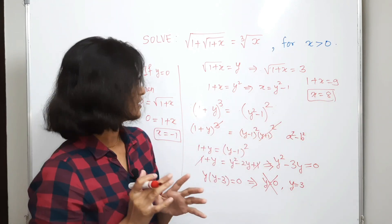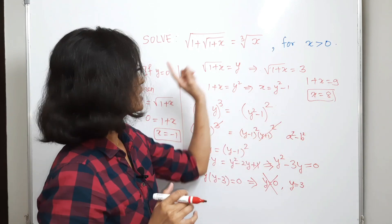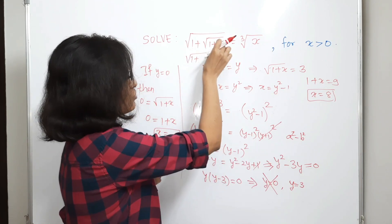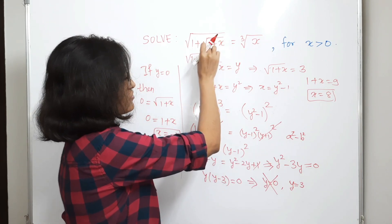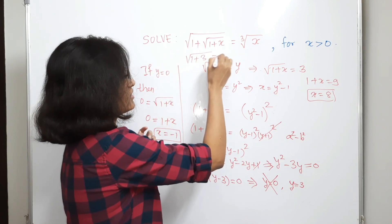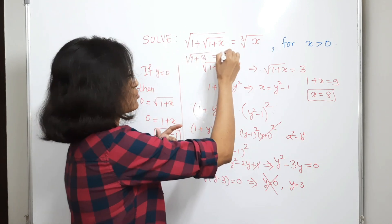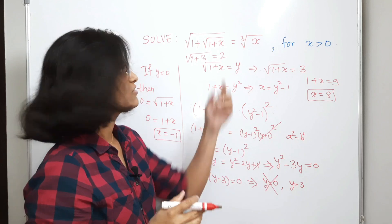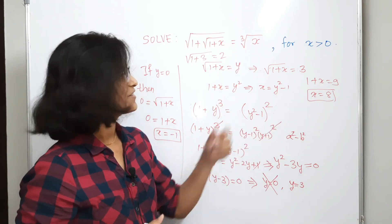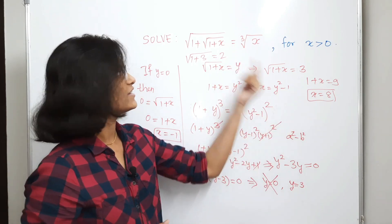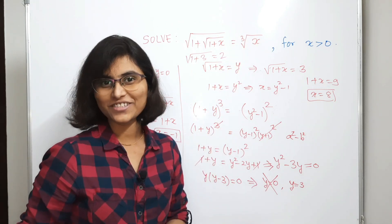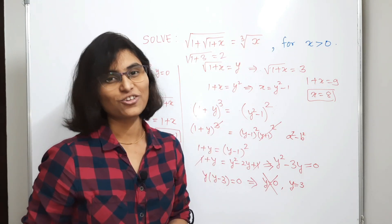Let's verify quickly. Put x equals 8: we get 1 plus the square root of 8 plus 1, which is square root of 9, which is 3 — and that equals square root of 4, which is 2, which is the same as the cube root of 8. So x equals 8 is confirmed as the solution. I hope you enjoyed this problem. Thanks a lot for watching.